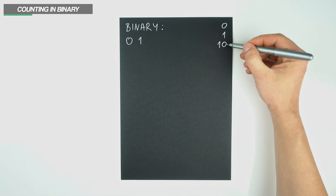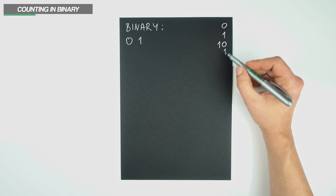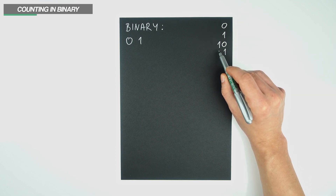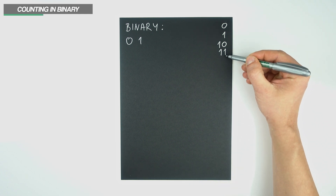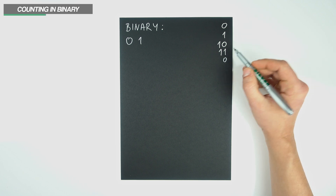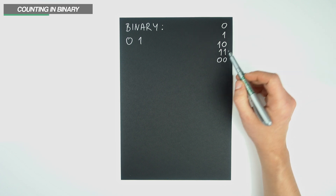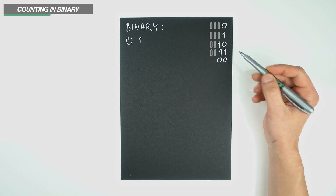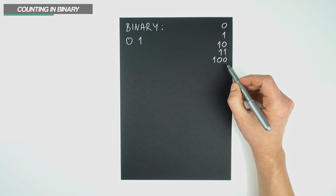Moving forward, we do have the possibility to increase the rightmost column by an increment of 1. Since we can do that, all the columns to its left simply get carried down, and as a result we end up with the number 11. Continuing to apply the same rules: we cannot increase the rightmost column, so we reset it to 0. We also cannot increase the next column, so we reset it to 0 as well. But since the next column has an invisible 0, we increase it to 1, and end up with the number 100.